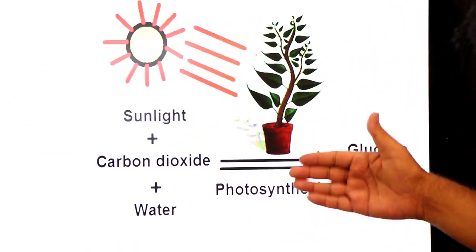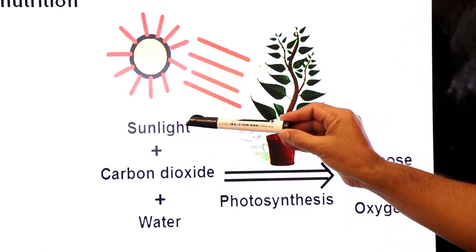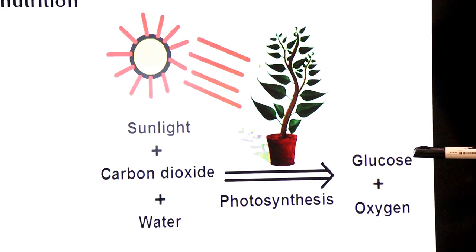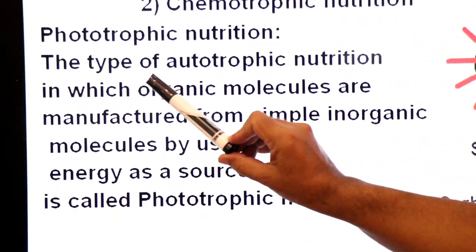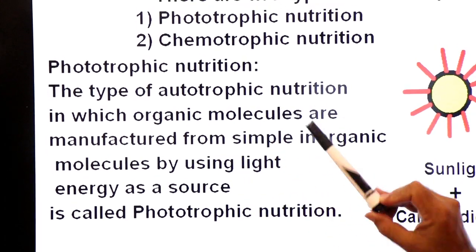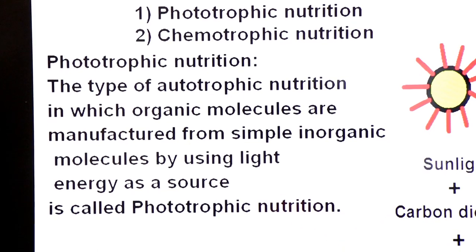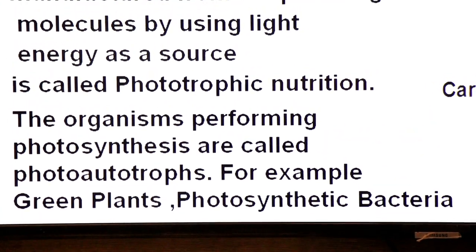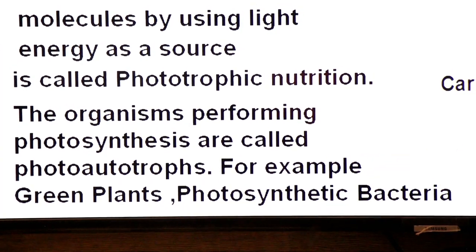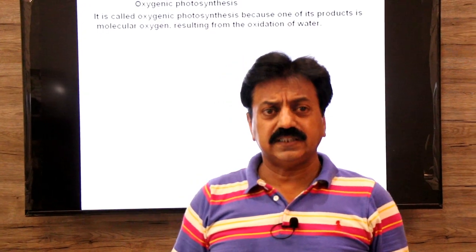Let's start with phototrophic nutrition. Look at this diagram — a plant is making its food, glucose, through photosynthesis. The reactants are sunlight, carbon dioxide, and water; the products are glucose and oxygen. Synthesis of glucose using the energy of sunlight is called photosynthesis, also called phototrophic nutrition. The organisms performing photosynthesis are called photo-autotrophs. Examples of photo-autotrophs include green plants and photosynthetic bacteria.